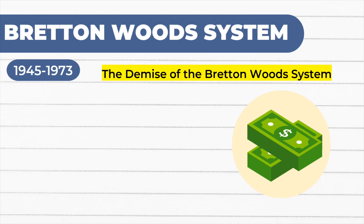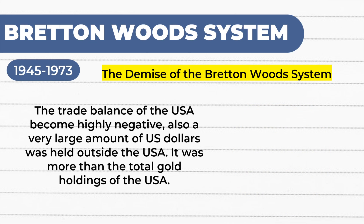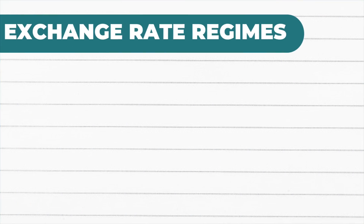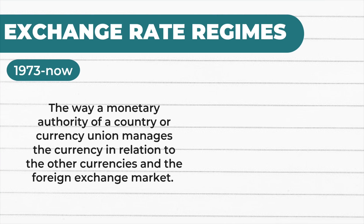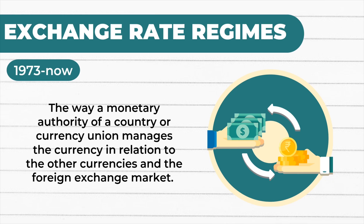The demise of the Bretton Woods system began when the trade balance of the USA became highly negative, and a very large amount of US dollars was held outside the USA — more than the total gold holdings of the USA. Number 5: Exchange Rate Regimes. An exchange rate regime is the way a monetary authority of a country or currency union manages its currency in relation to other currencies in the foreign exchange market.